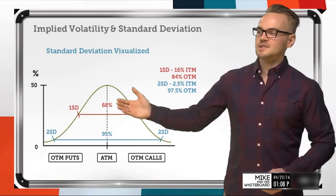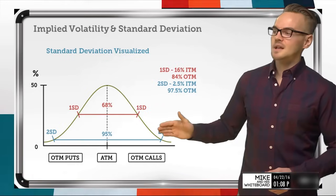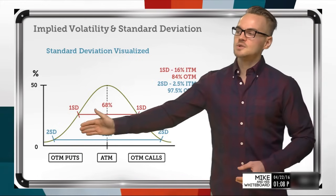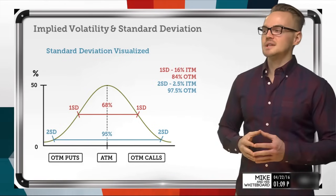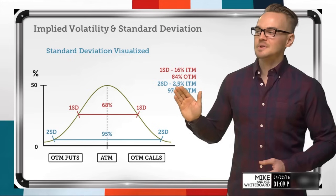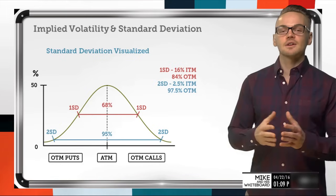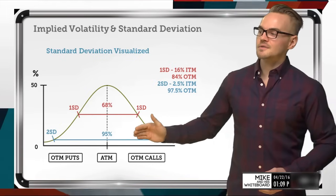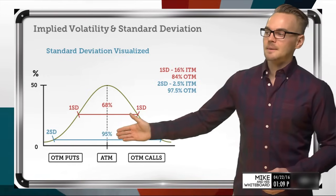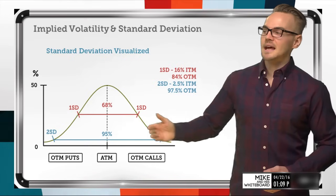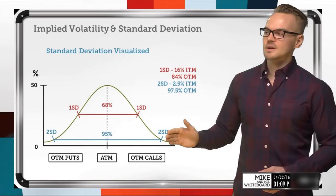Just like the one standard deviation calculation, if I were to sell a two standard deviation strangle — selling a two standard deviation call on the upside and a two standard deviation put on the downside — I would add those together, which gives me that 5% chance of being in the money: 2.5% on one side, 2.5% on the other. That gives me coverage of 95% of the occurrences — subtracting that 5% from 100 gives me that 95% occurrence range.